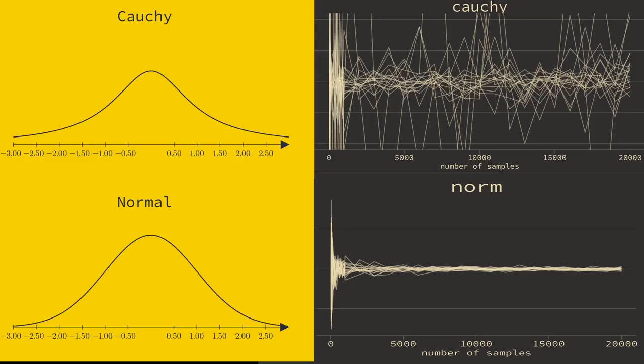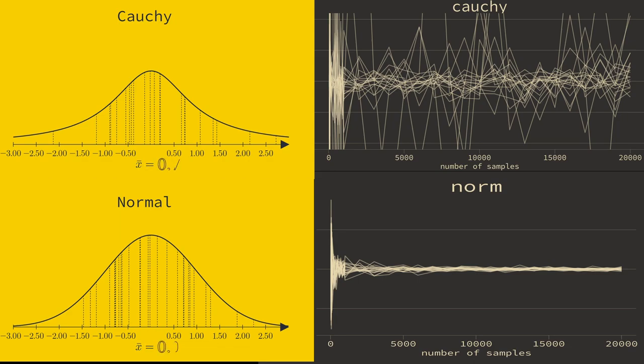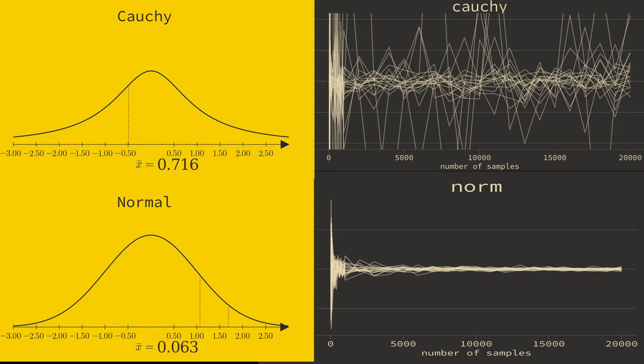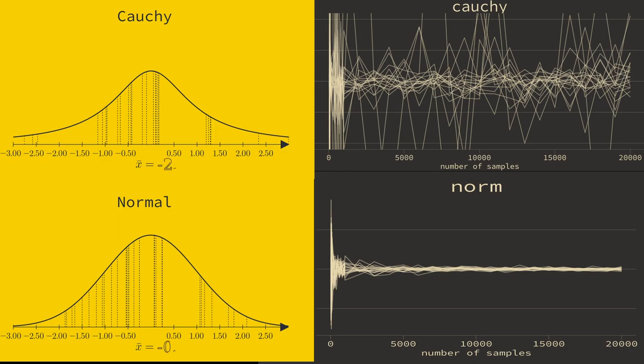The Cauchy distribution is a pathological distribution. Where other distributions have a defined expectation, the Cauchy does not. It refuses to obey or conform to the central limit theorem and will never converge, no matter how large the samples.